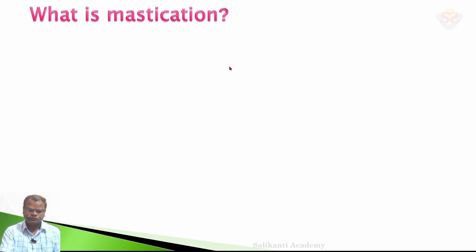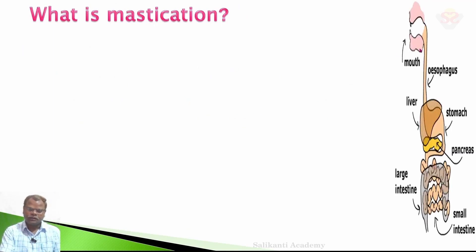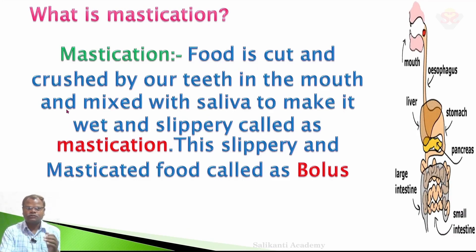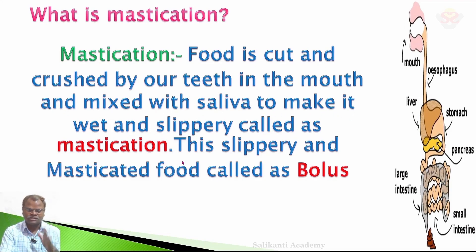What is mastication? Food is cut and crushed by our teeth in the mouth and mixed with saliva to make it wet and slippery — this process is called mastication.